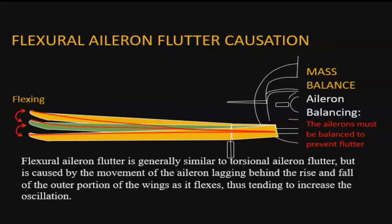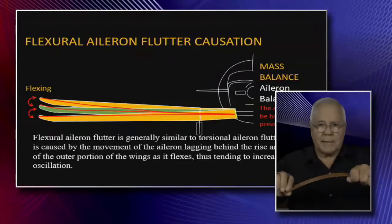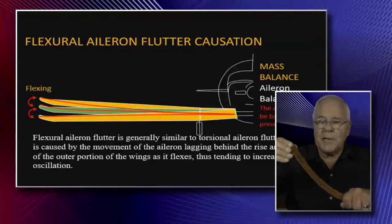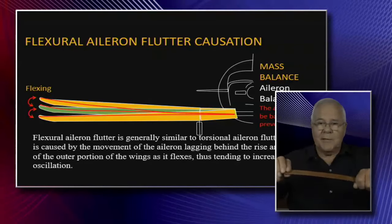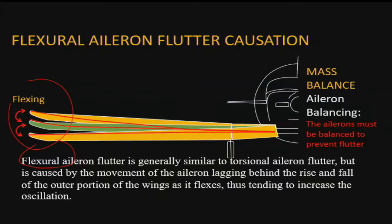That was torsion. Now flexural flutter is when the wing flexes up or down. Flutter specifically is the moment when it hits the elastic stop, bounces back to the other elastic stop, and keeps repeating. Flexural flutter is the wing flapping up and down; torsional flutter is the twisting motion. Torsional flexural flutter combines both. Flexural aileron flutter is generally similar to torsional aileron flutter but is caused by the aileron lagging behind the rise and fall of the wing.